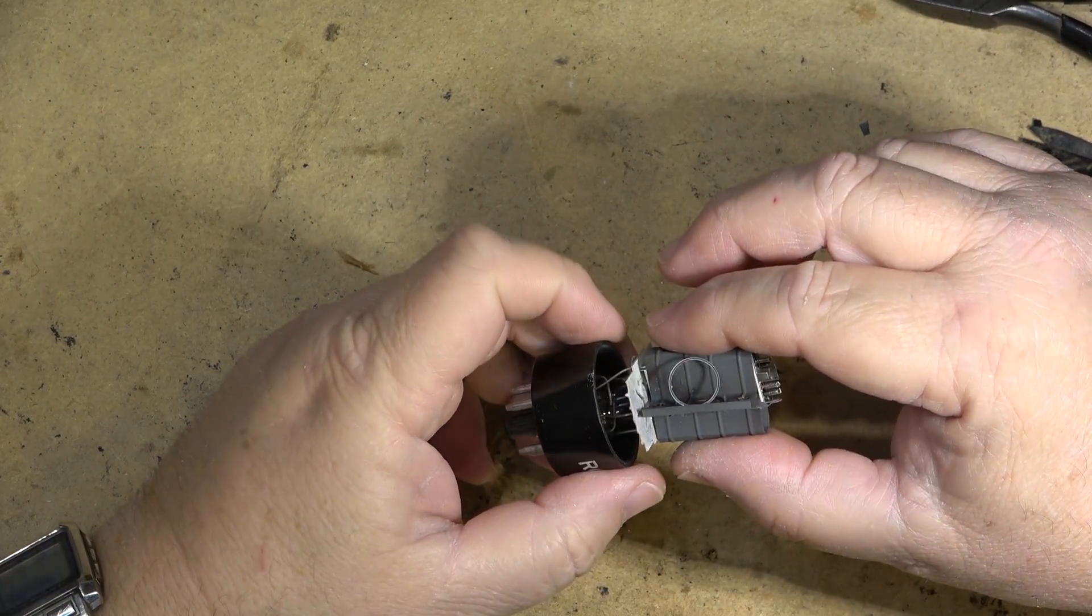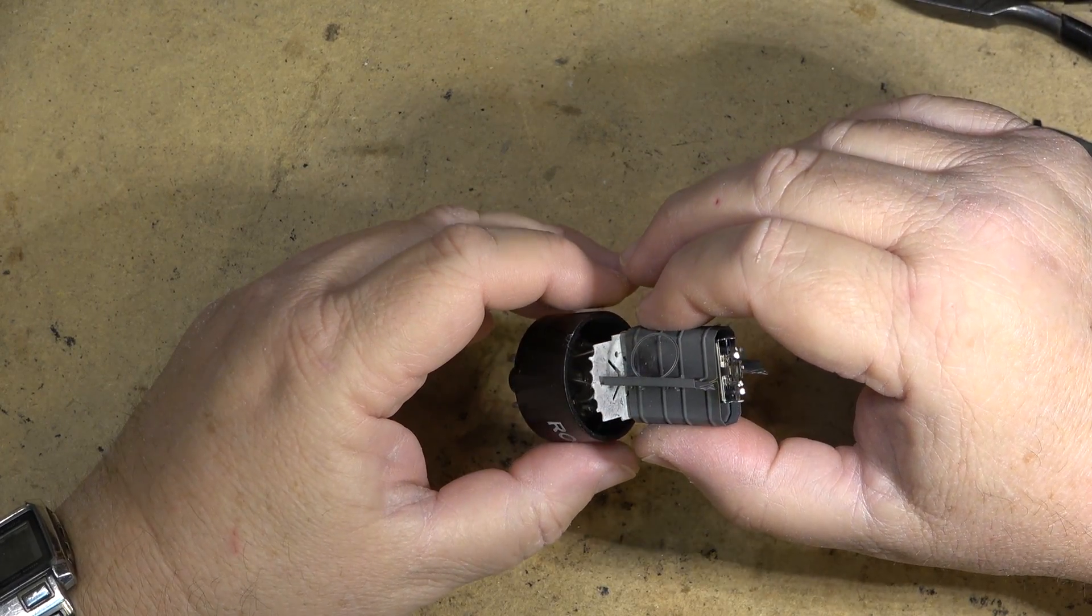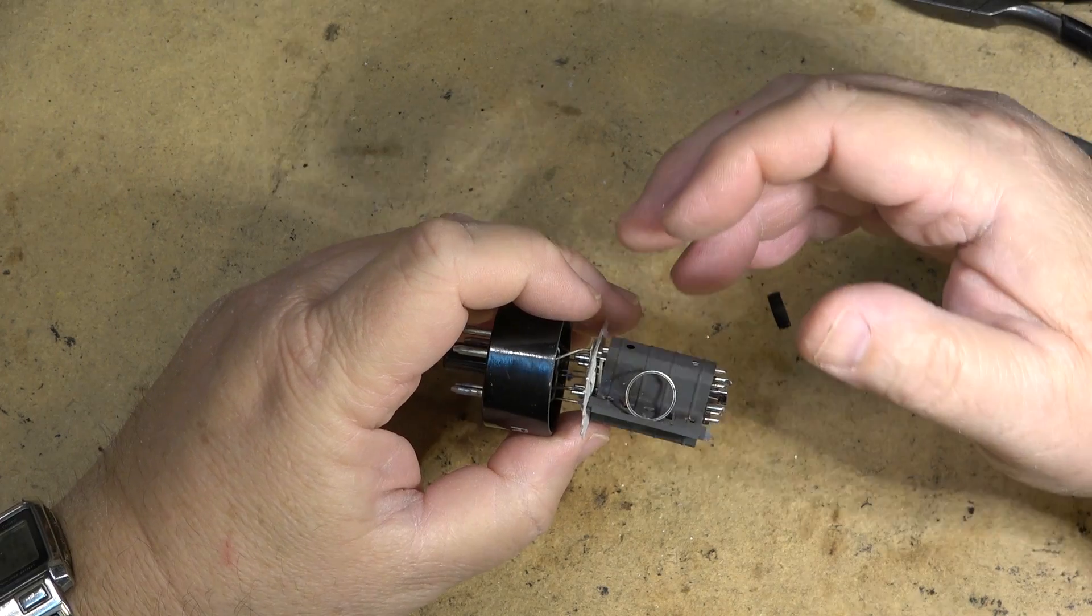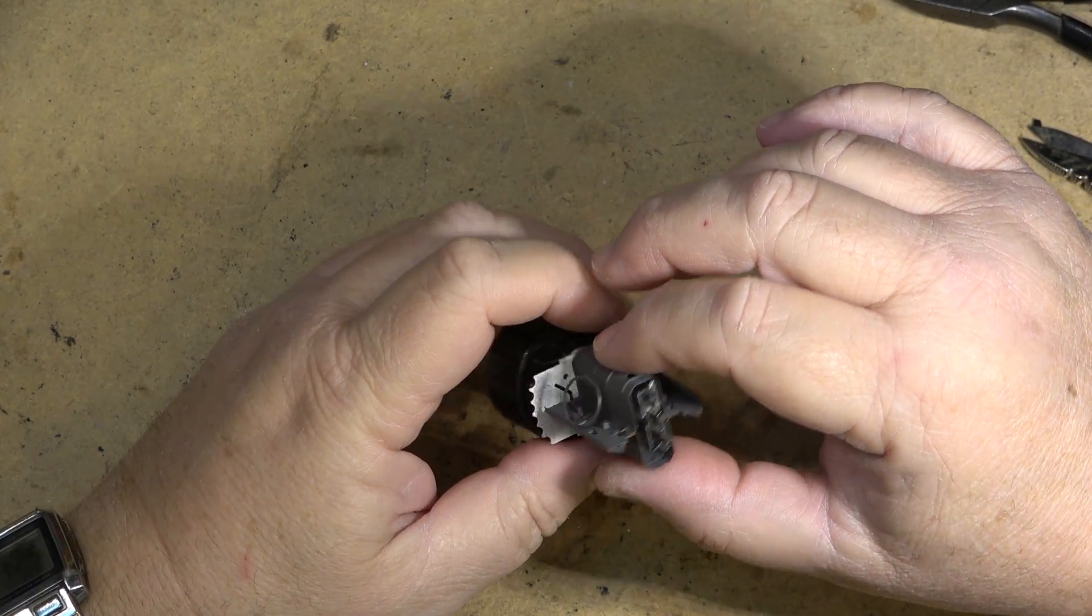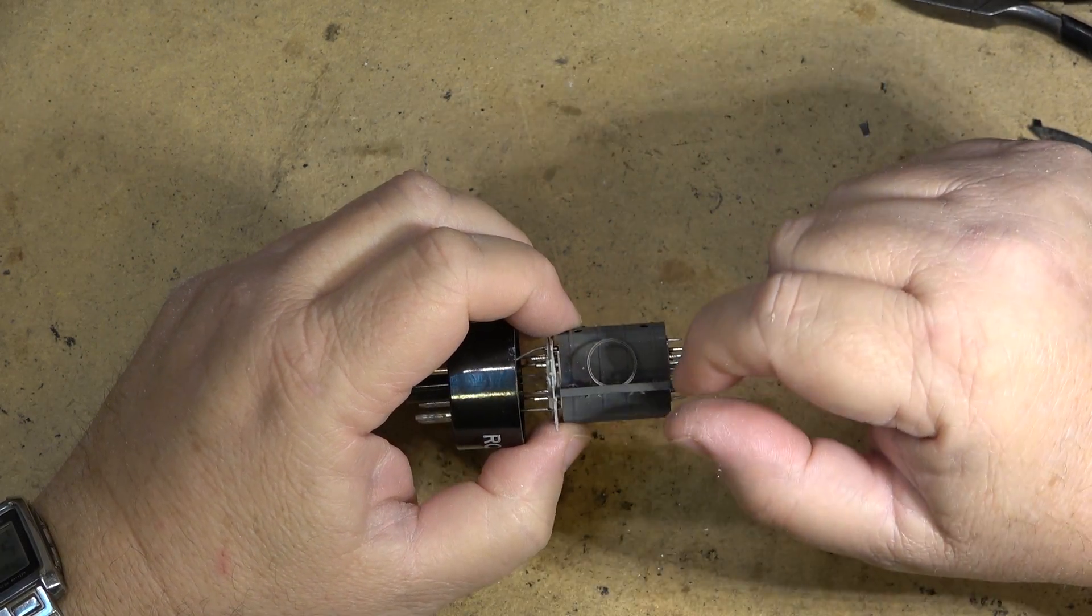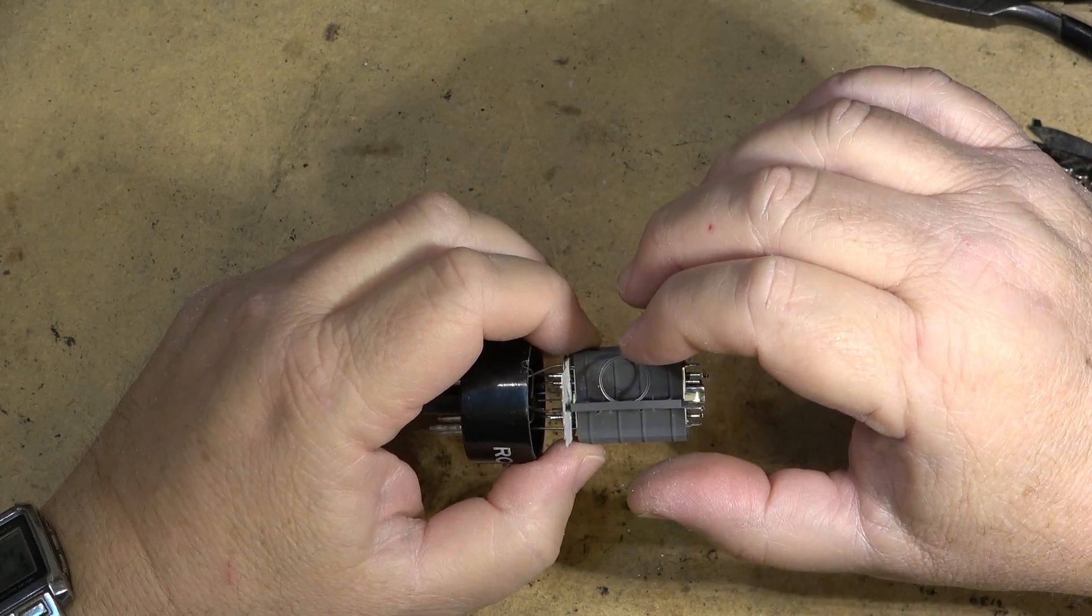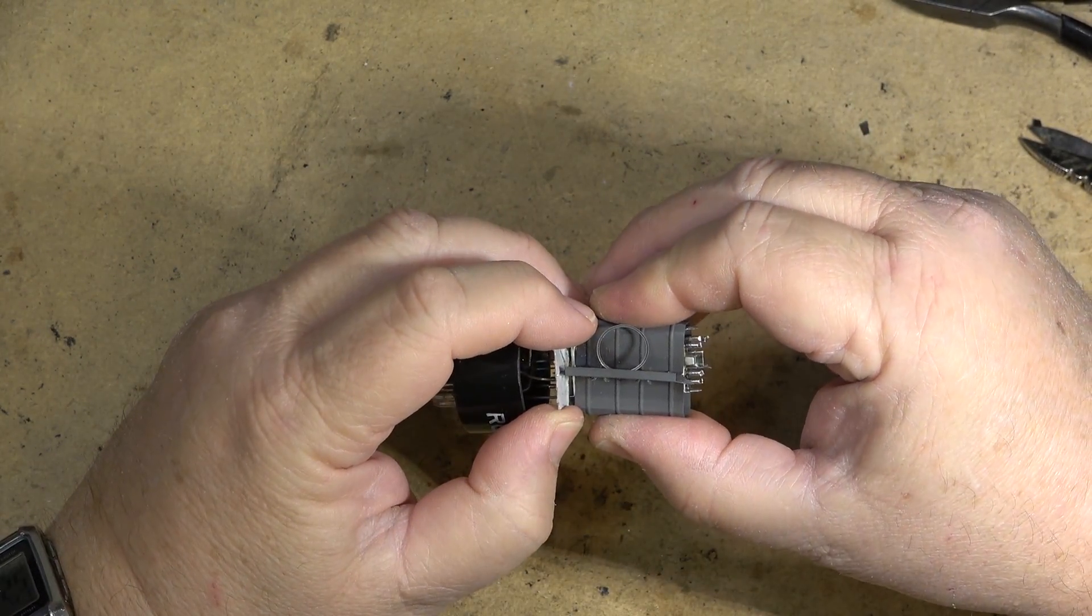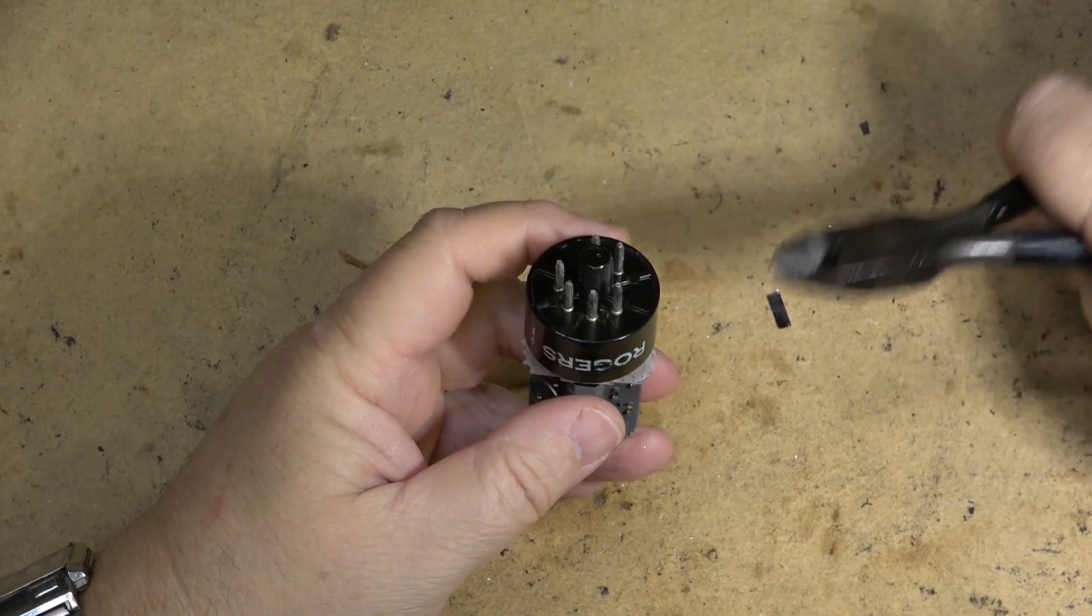They would continue to be reactive so that if any oxygen or any air were to leak into the tube over its life, they would react with the oxygen and bond with it and remove it. Eventually the getter would start to turn a milky white on the inside of the glass, and once the getter was used up, then the oxygen would get in and destroy the tube. But it would extend the life if there was a minor leak.